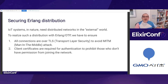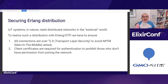By definition, IoT systems cannot be local — the I of IoT stands for the Internet. To realize secure distribution with Erlang OTP, we have to meet two requirements. First, make sure that all connections are over TLS to avoid a man-in-the-middle attack. Second, authenticate nodes before they try to join the network. Platypad provides examples of how to implement a secure network.